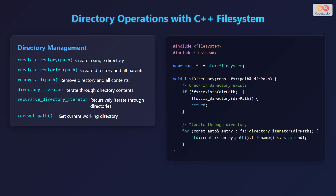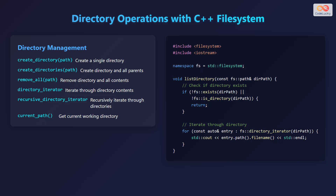Let's learn about directory operations with the C++ filesystem library. create_directory() takes a path and creates a single directory. create_directories() takes a path and creates the directory and all parent directories. remove_all() takes a path and removes the directory and all its contents. directory_iterator iterates through directory contents, and recursive_directory_iterator recursively iterates through directories. current_path() gets the current working directory. Here's an example of listing a directory — the function list_directory() checks if the directory exists and is actually a directory, then iterates through it using a for loop with directory_iterator, printing the file name of each entry.